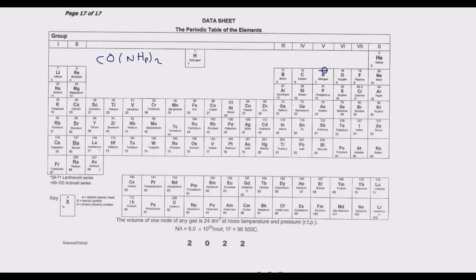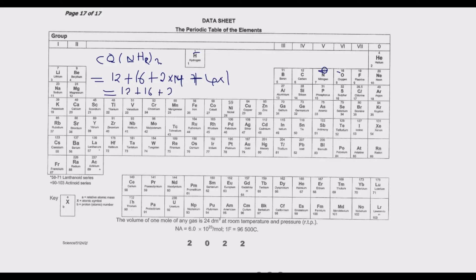Breaking down the molar mass of urea: carbon — 1 atom at 12; oxygen — 1 atom at 16; nitrogen — 2 atoms at 14 each, giving 2 × 14 = 28; hydrogen — 2 × 2 = 4 atoms at 1 each, giving 4 × 1 = 4. Adding these up: 12 + 16 + 28 + 4.